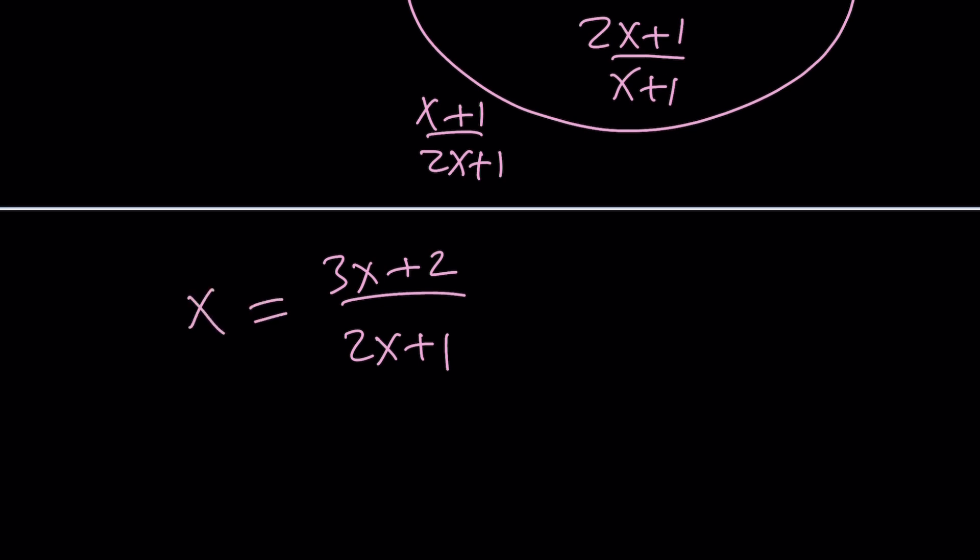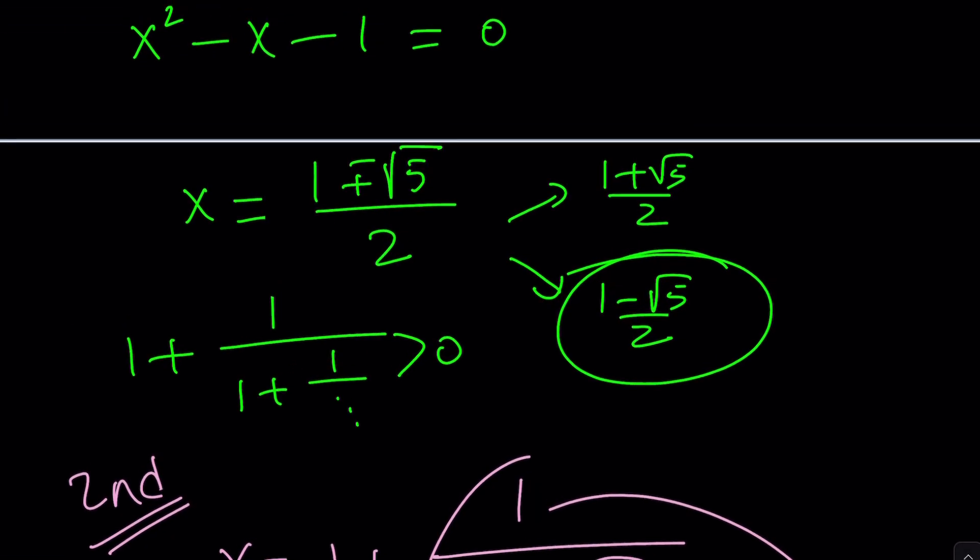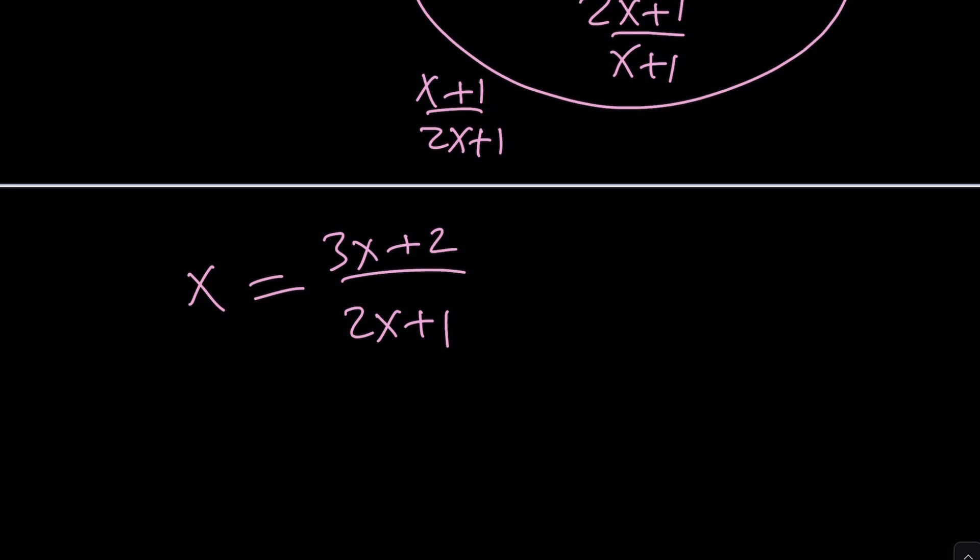And that should be the whole thing. And we're supposed to set it equal to x. Make sense? I hope so. Now, let's go ahead. And here, you can clearly see why x should not be negative 1 half. You look at the denominator here, x should not be negative 1 half, obviously.